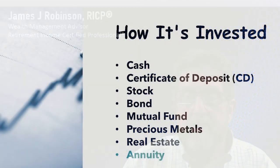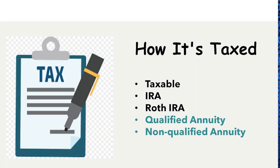Two basic ways to look at where your money is going would be how it would be invested, and also how it's taxed. We're talking about two separate things. How it's invested — that money could be in cash, CDs, stocks, bonds, mutual funds, precious metals, real estate, or an annuity. As far as how it's taxed, it could be in a taxable account, an IRA, a Roth IRA, or a qualified or non-qualified annuity. You're seeing there's a little bit of overlap here with the term annuity, and I'll explain that in just a minute.